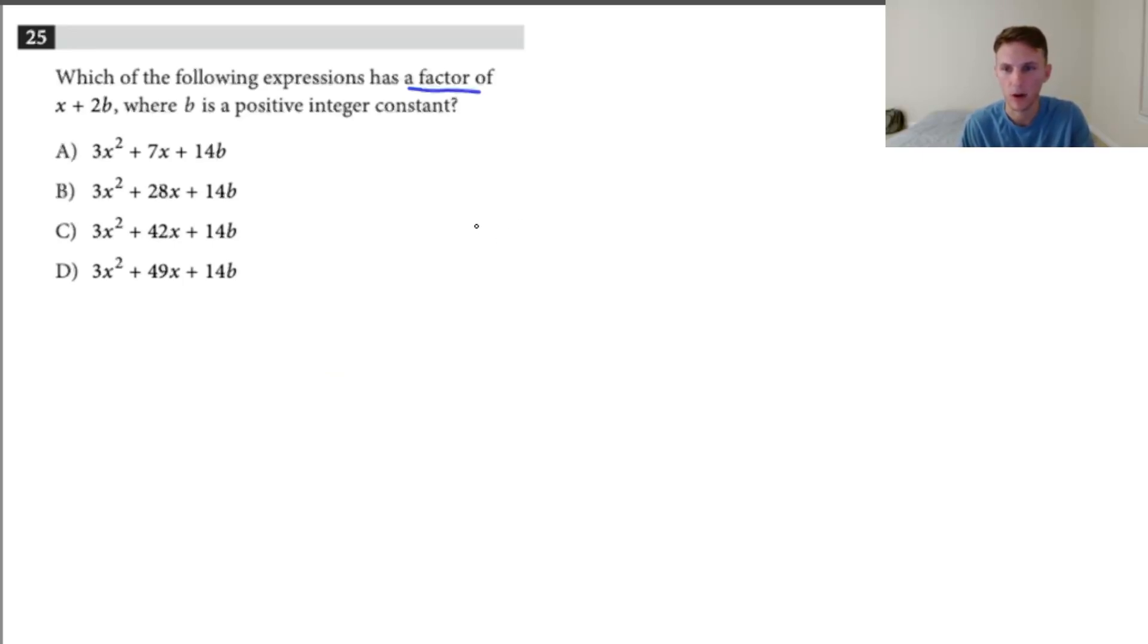This question is asking for an expression that could be one that has the factor x plus 2b. So what I would do is look at this and go, okay, so it needs to have a factor of x plus 2b, and it needs to have the last term be 14b. So if you're familiar with how to build out a factored quadratic, you should know that means the last term is going to need to be a 7, and then since we have this 3 in front, we're going to need to have a 3x multiplying the x to get 3x squared. So when I write that out, I'm going to have x plus 2b times 3x plus 7.